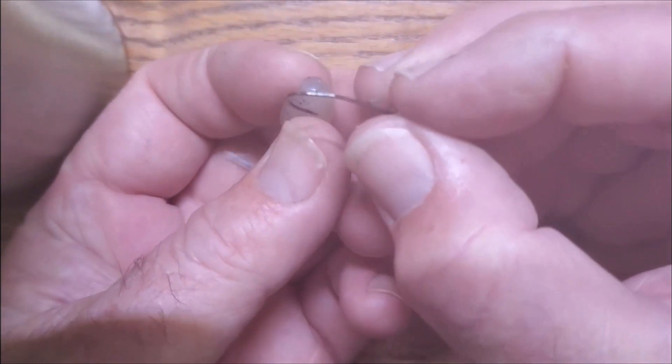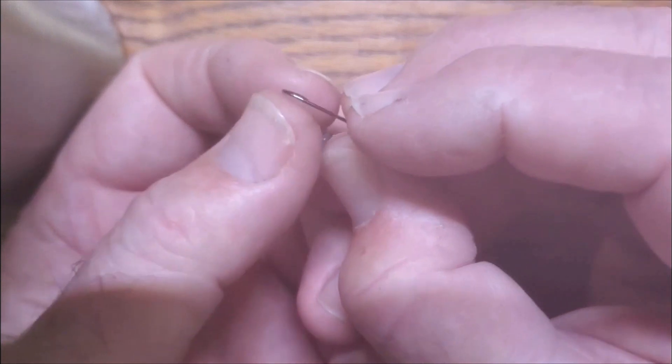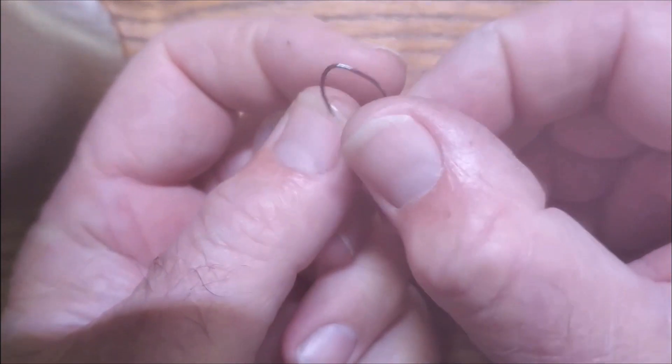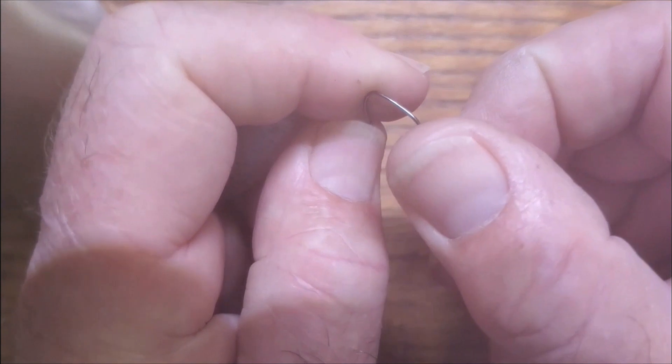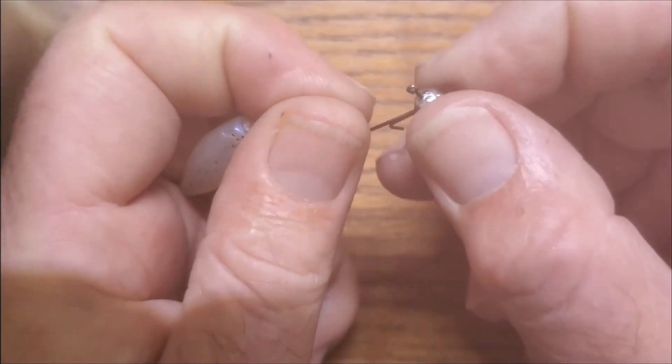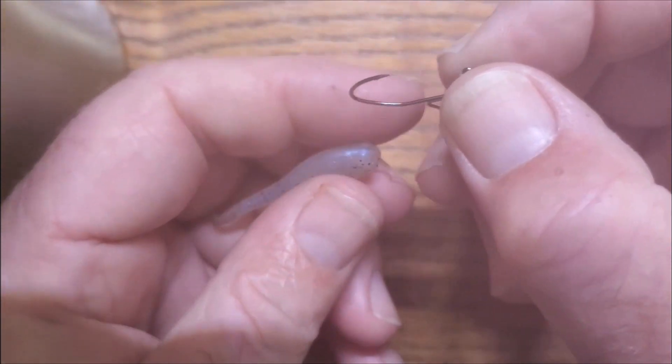So you're going to start with the jig. First thing we're going to do is open these jig hooks up just a little bit. I usually just take my fingernail and raise it up just a little bit because you want a little bit wider gap.